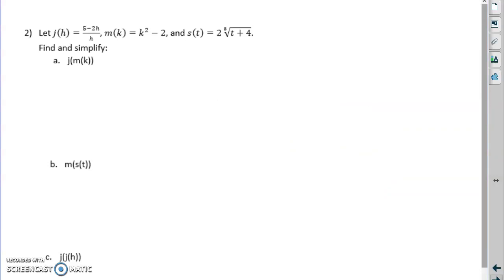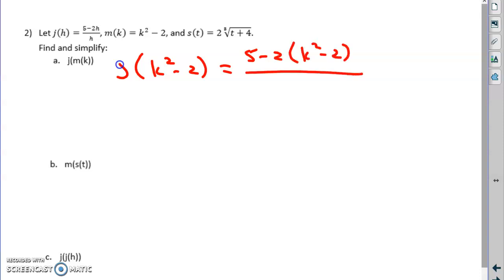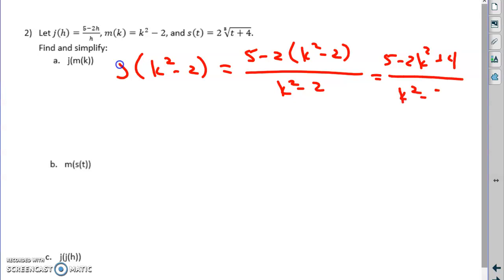We now have three functions j, m, and s and we're going to do some composition. First: j of m of k. The output of m becomes the input of j. If m is k squared minus 2, and in j wherever I see an h I replace it with k squared minus 2, we distribute through that negative 2 and clean up the numerator to get negative 2k squared plus 9, all over k squared minus 2.